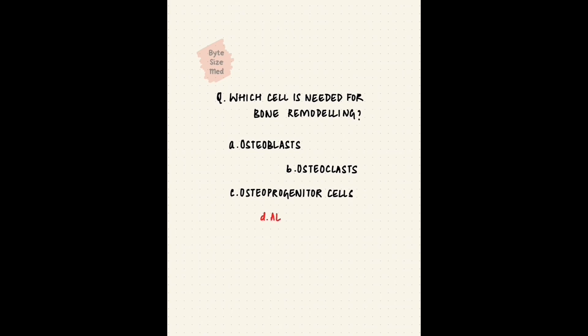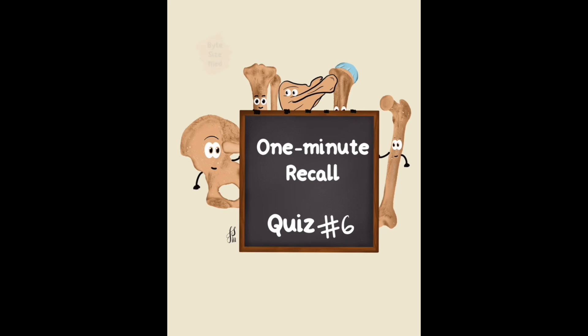Time's up. I should have given you a fourth option - all of them. Bone remodeling needs them all. Osteoclasts resorb bone, osteoprogenitor cells can differentiate into osteoblasts, which can then synthesize bone matrix that gets mineralized. Bone remodeling happens throughout life in response to different stresses and strains that the bone faces, and it needs all of these cells.